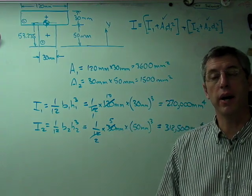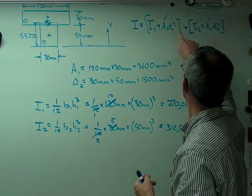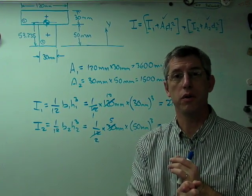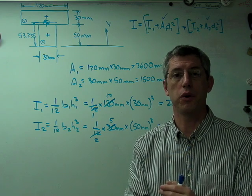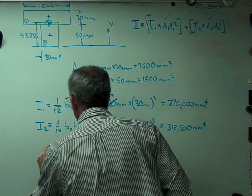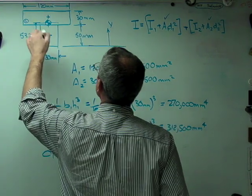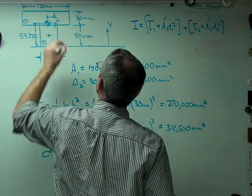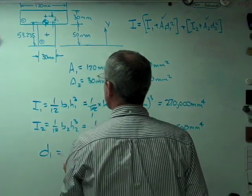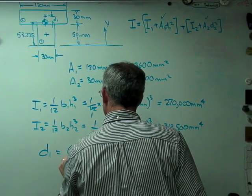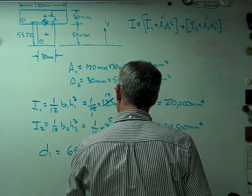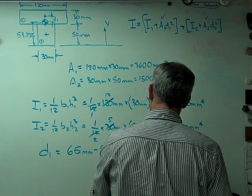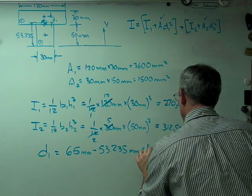The last thing that needs to be calculated is these Ds, these distances right here. Those are the distances from the centroids of the individual boxes to the centroid of the entire shape. D1 is going to be the distance from there to there. I know that the centroid location for the box is 65 millimeters, and the centroid of the entire shape is 53.235 millimeters.